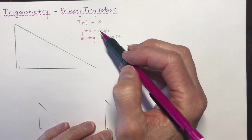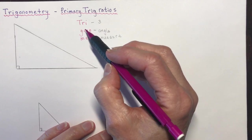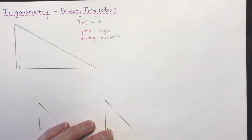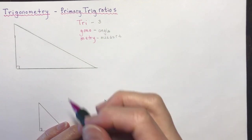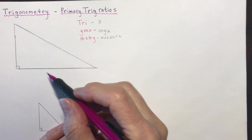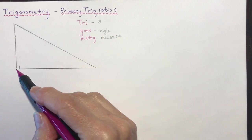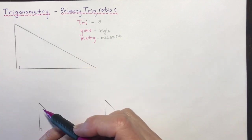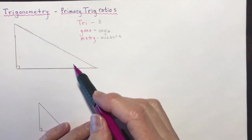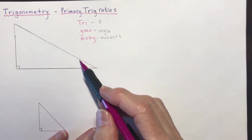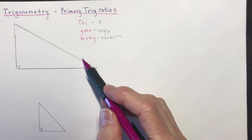The part of trigonometry we're going to be focusing on uses primary trig ratios, and they work when you have right-angle triangles. So this is the basic part of trigonometry.